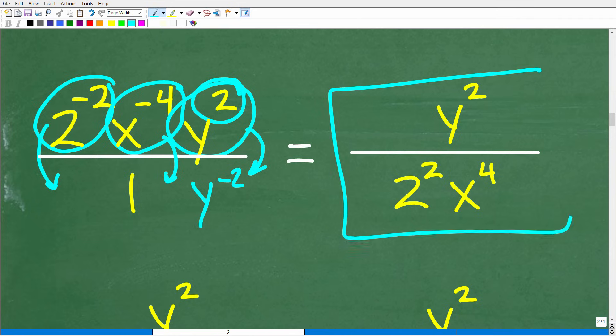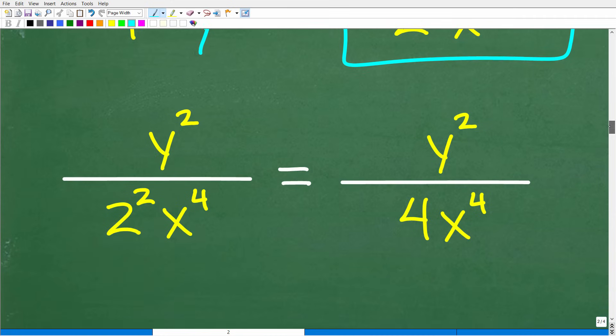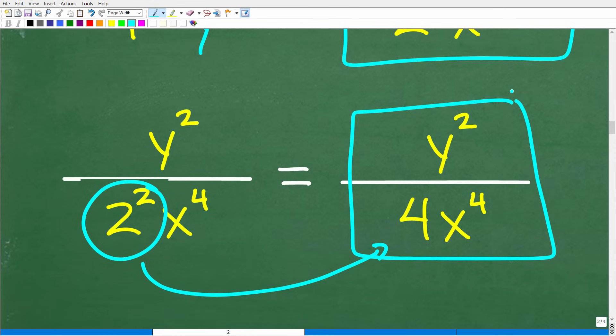So we're almost done here. We have Y² over 2² times X⁴, no negative exponents. And the only thing left to do here is to simplify this 2². We might as well just write that as four. And this would be our final answer.